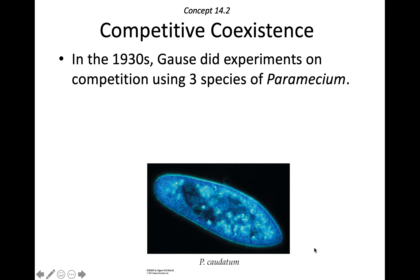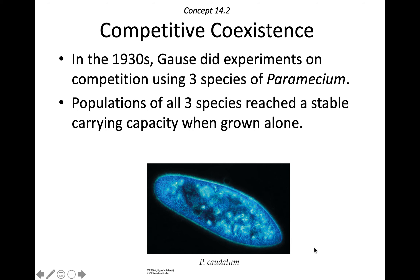In the 1930s, a Russian ecologist named G.F. Gause performed lab experiments on competition using three species of single-cell protists called Paramecium. Each species reached a stable carrying capacity when grown alone — just like we saw with diatoms — and then when grown together, some were driven to extinction.